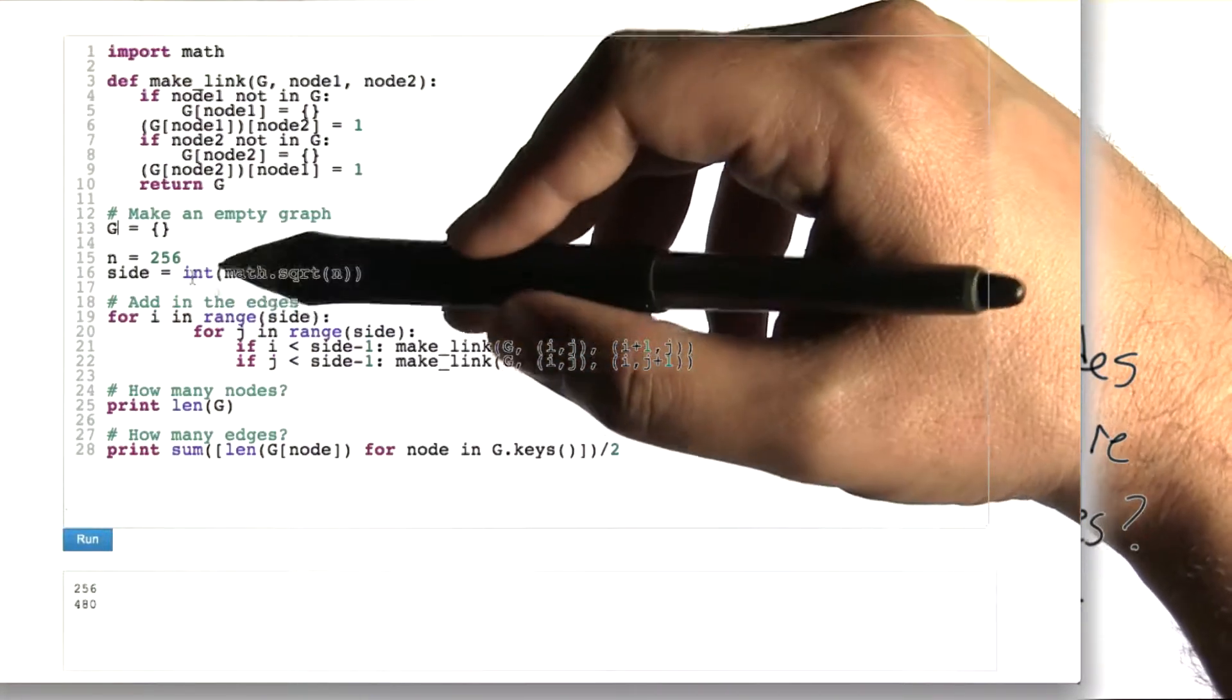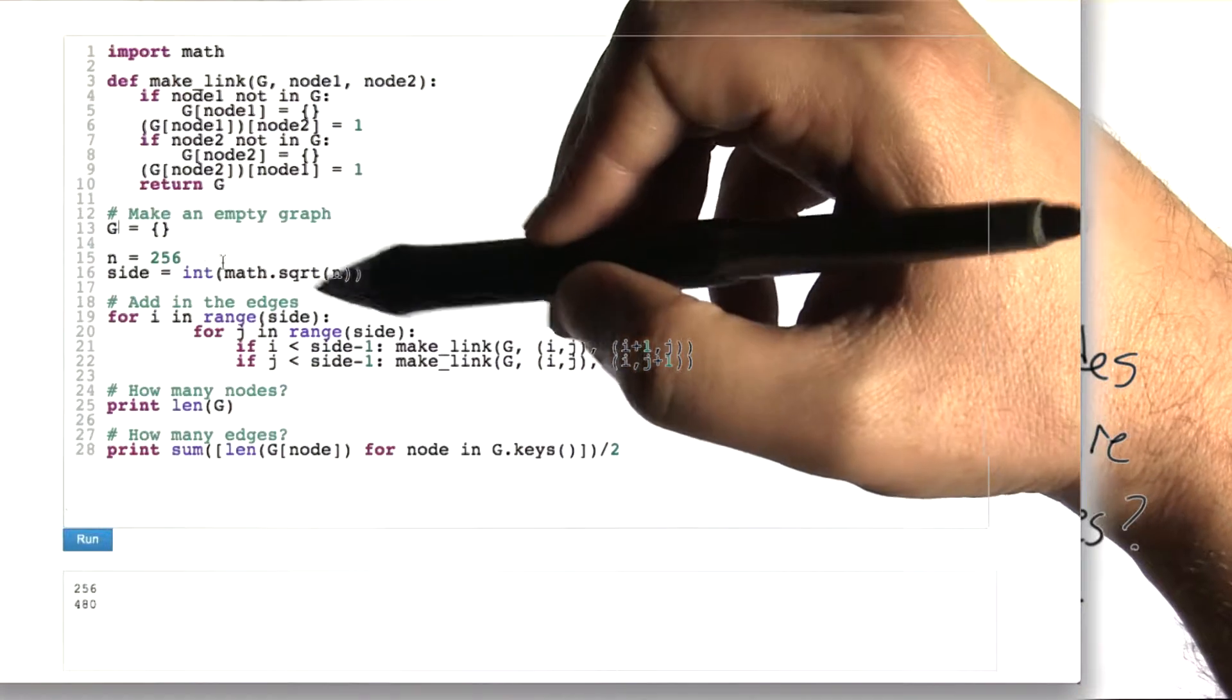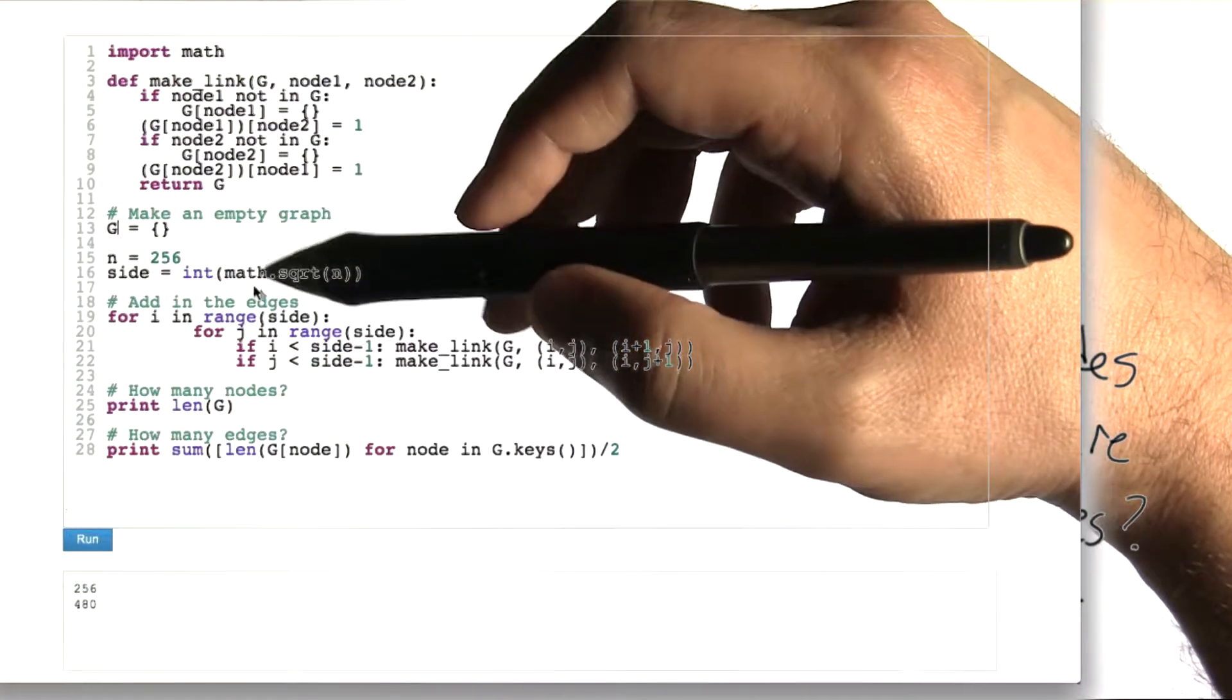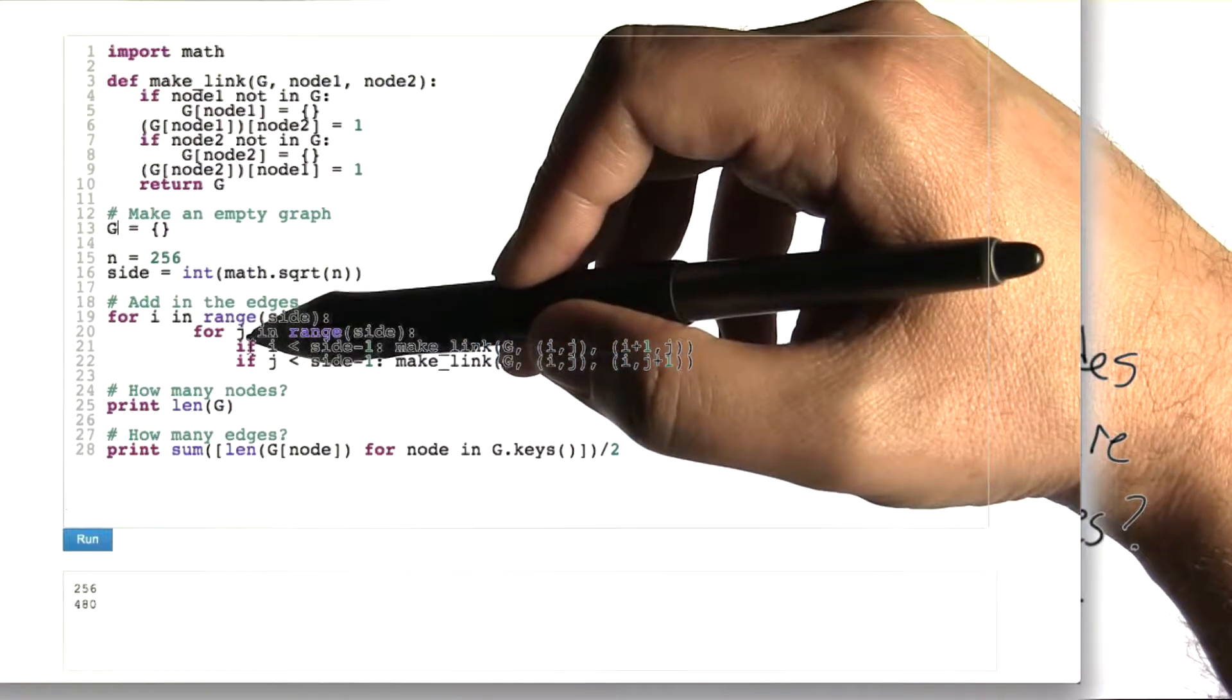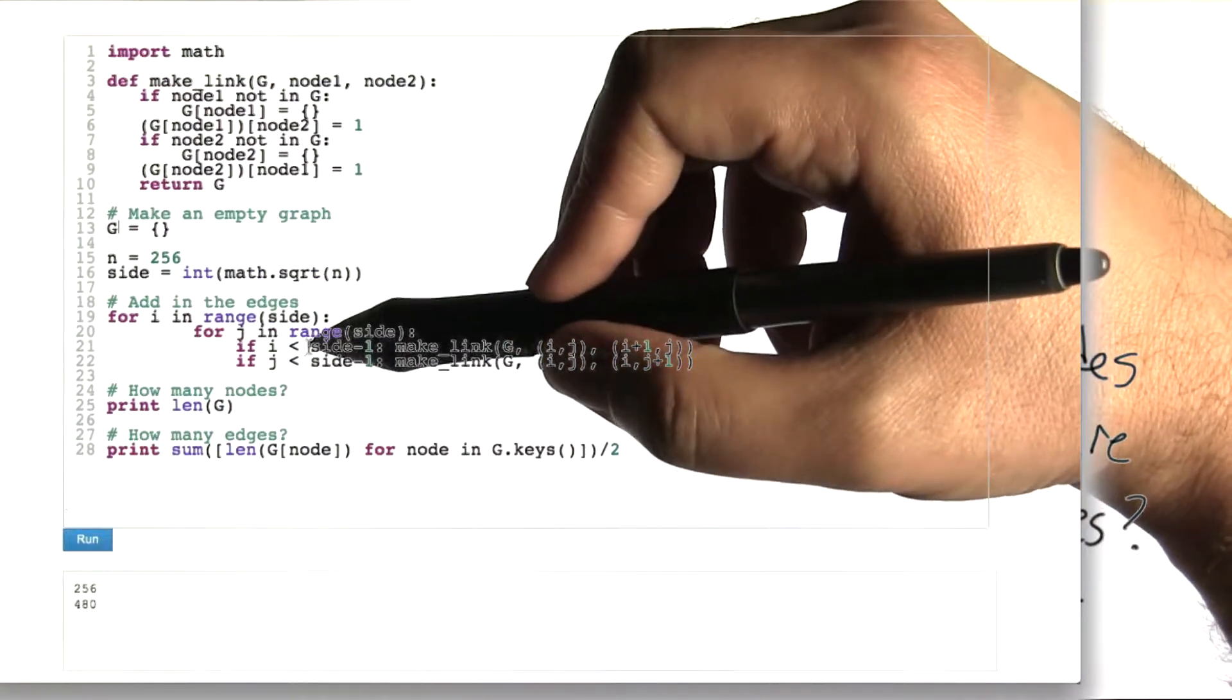The number of nodes per row and column on a side here is the square root of n, or 16. And then what we're going to do is we're going to run through all the pairs of nodes in the graph i and j. And for each one, if it's not on the very edge,